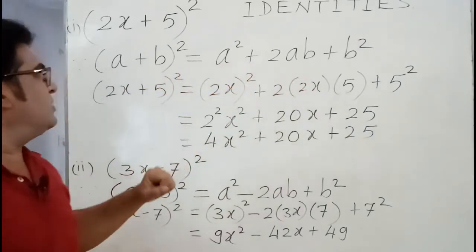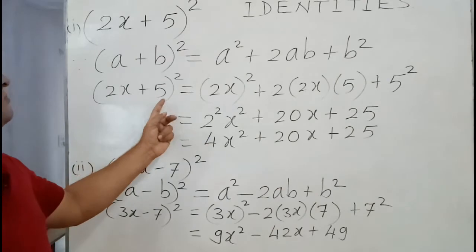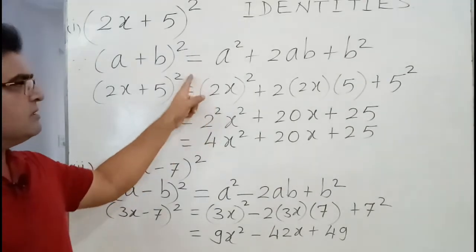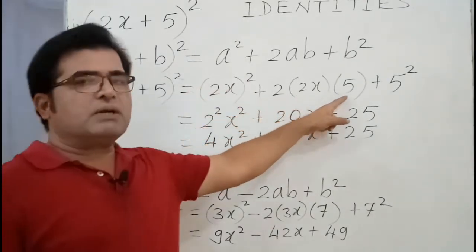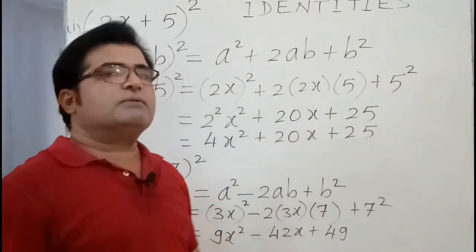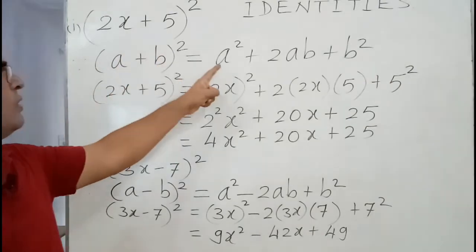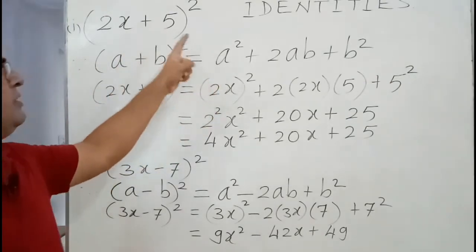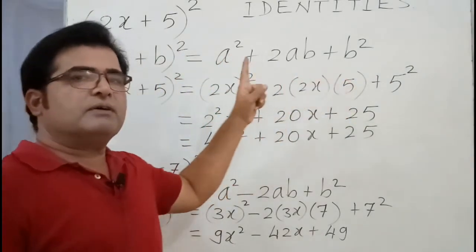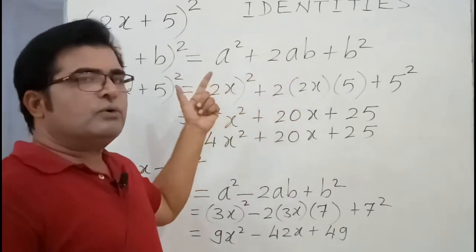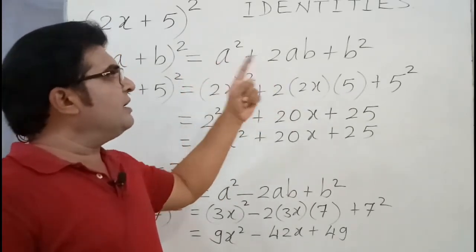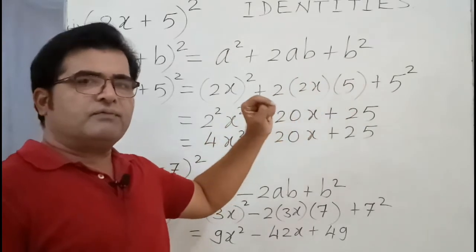(a+b)² equals a² + 2ab + b². So (2x+5)² equals (2x)² + 2(2x)(5) + 5². Means instead of a you have to write 2x and instead of b you have to write 5. Wherever you have a in identity you have to write 2x and wherever you have b you have to write 5.